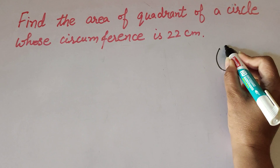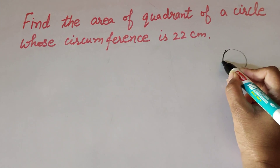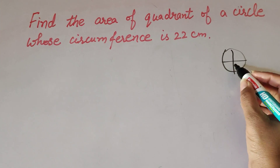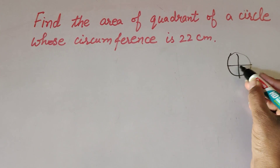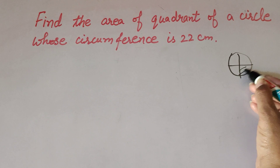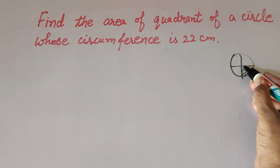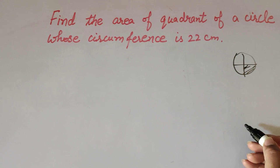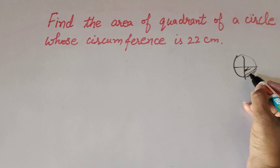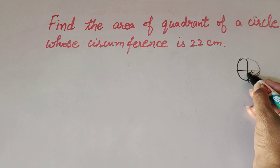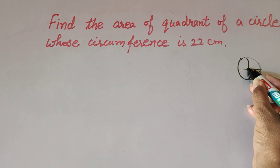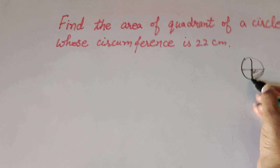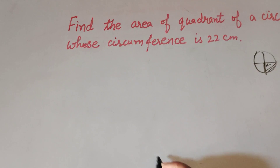If this is the circle whose circumference is 22 cm, we divide the circle into 4 parts. These parts are known as quadrants, and we find the area of 1 quadrant. The angle of a quadrant is 90 degrees.